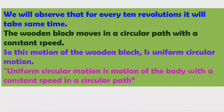Uniform circular motion is the motion of a body with a constant speed in a circular path. The body travels in a circular path with constant speed — not velocity — because in circular motion the direction is varying even though speed is constant.